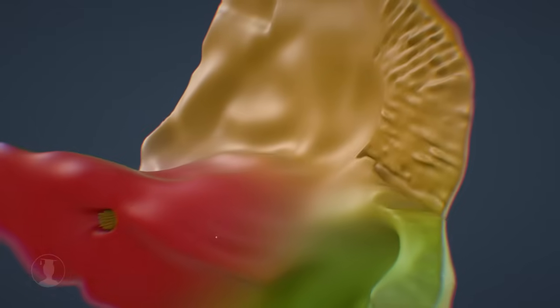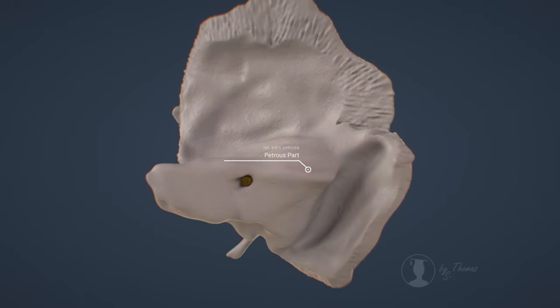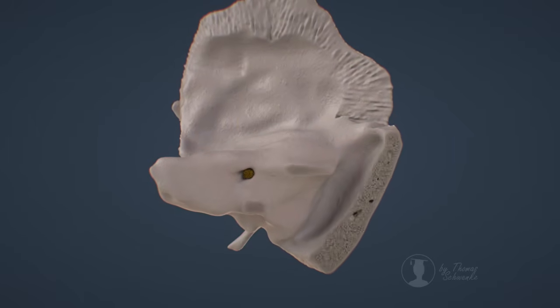The inner ear, on the other hand, is surrounded by the petrous part of the temporal bone. Due to its compact structure, the petrous part is one of the hardest bones in the human body.